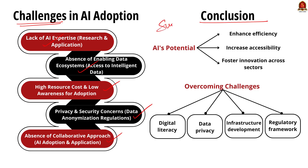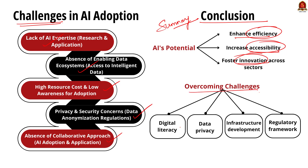In the conclusion, summarize and give a positive way forward. AI has the potential to transform India's socioeconomic landscape by enhancing efficiency, increasing accessibility and fostering innovation across various sectors. However, to fully harness the benefits of AI, India must address several challenges including digital literacy, data privacy, infrastructure development and regulatory frameworks. This is how we can conclude the answer.